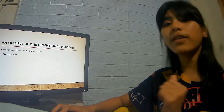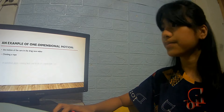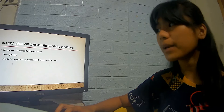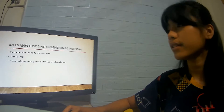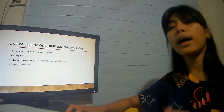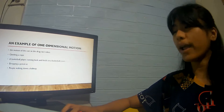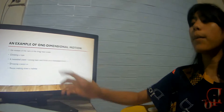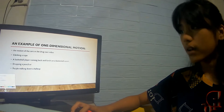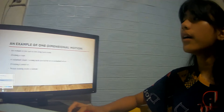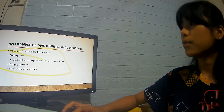Next we have climbing a rope — that is an example too. A basketball player running back and forth on a basketball court. Dropping a pencil, or people walking down the hallway. These are all examples of one-dimensional motion.